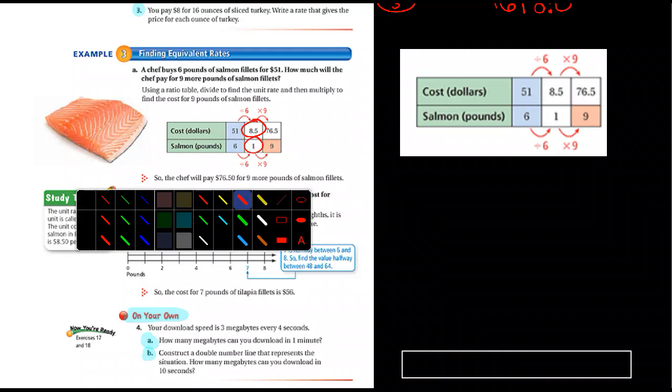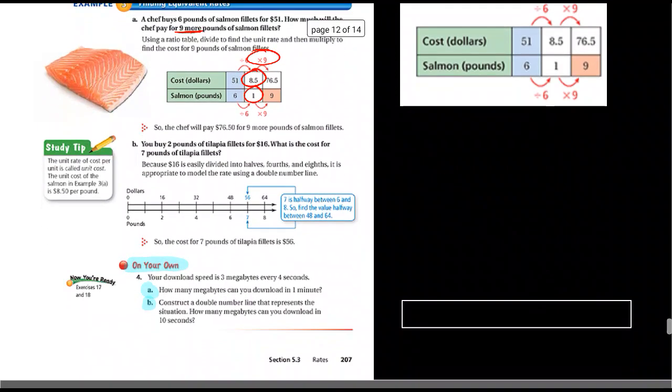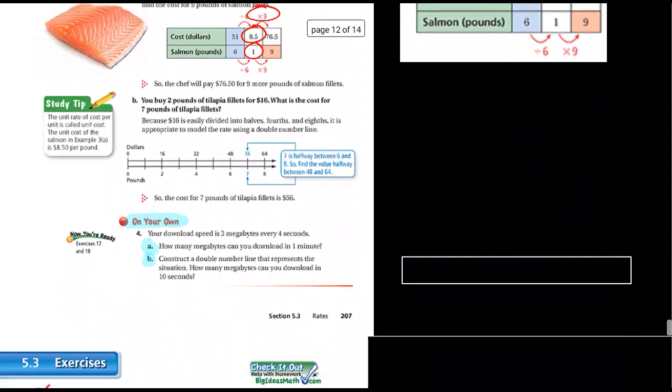And then it says, well, what if they buy nine more pounds? Well, then you would just multiply, and they did it right there for you. You would multiply it by nine. So that's one way to figure out some of these problems. That's a good example you can refer back to.